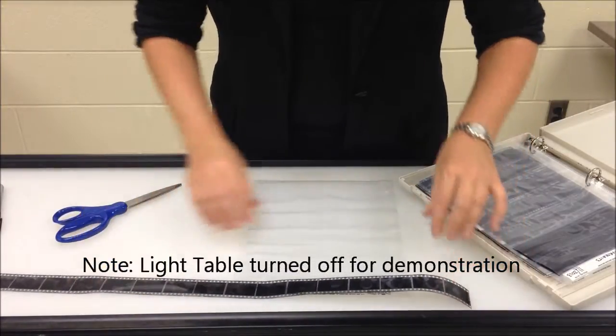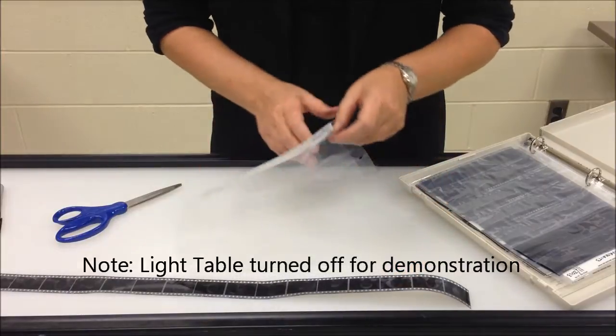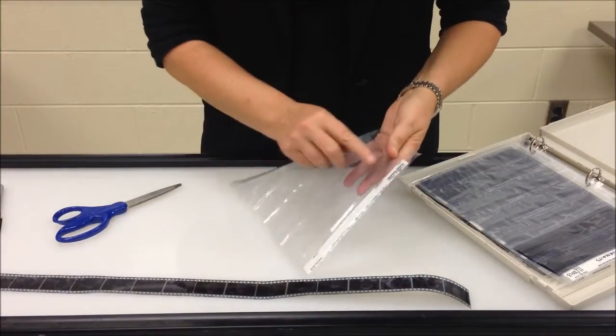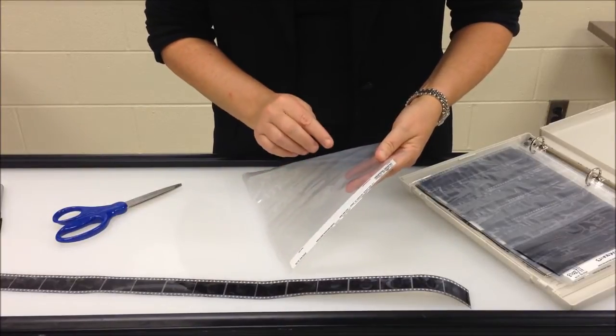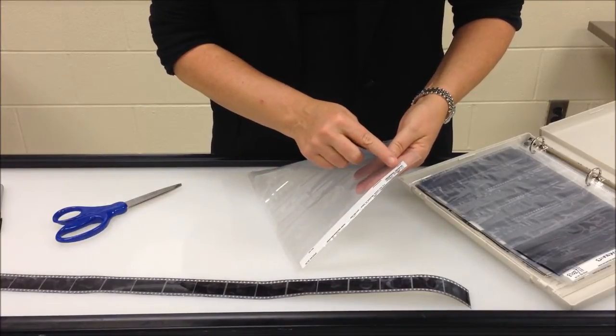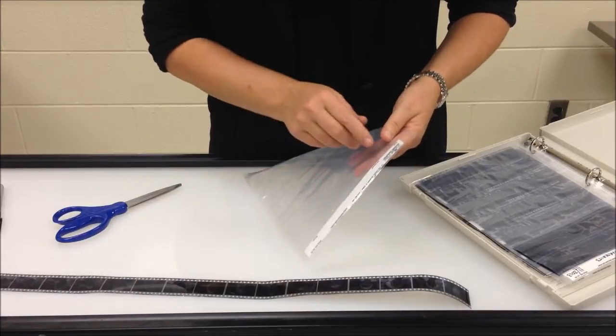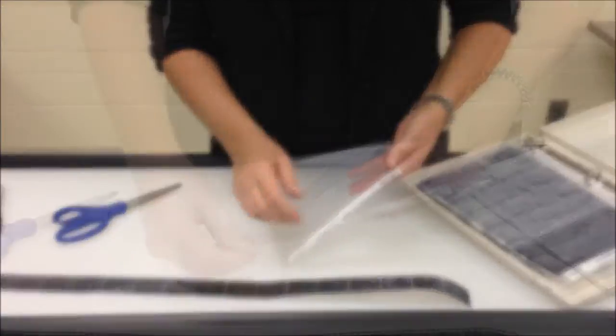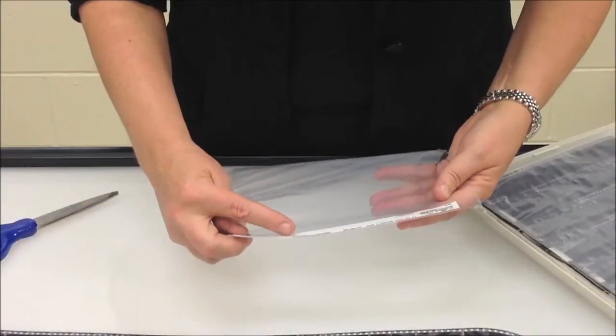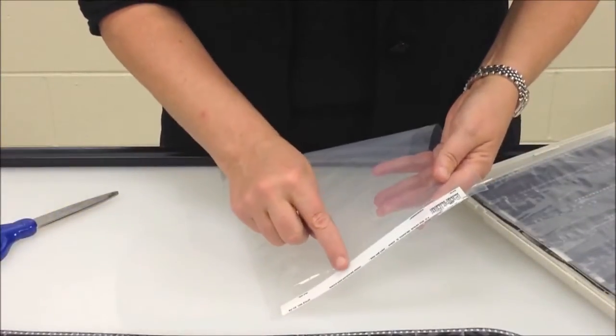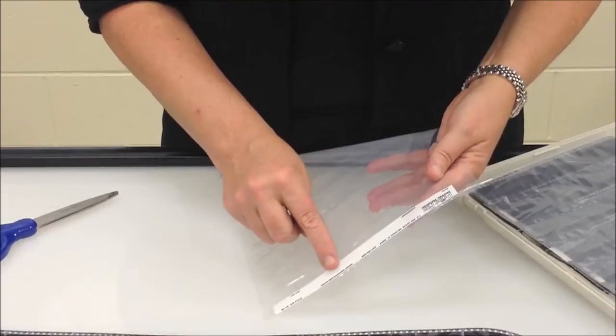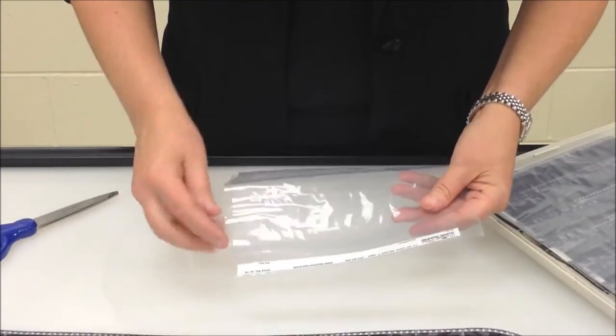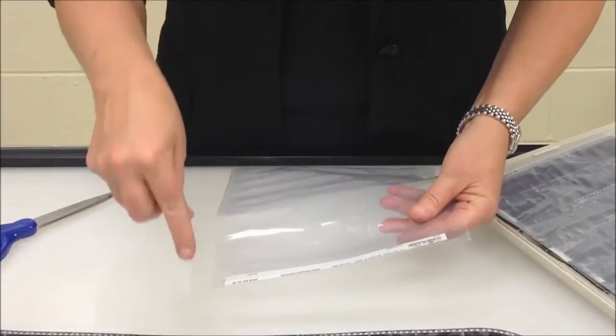On the light table, place your film sleeve in the proper orientation, which can be seen by the information at the top of the film sleeve where it reads Print File Archival Preservers. At the top in very tiny lettering, it says insert emulsion side down. That means you put the film into the sleeve emulsion side down.